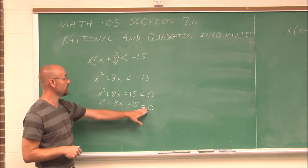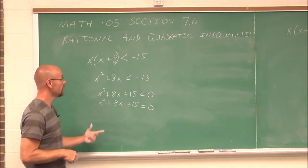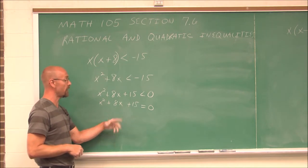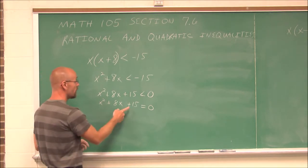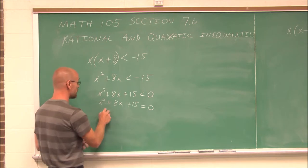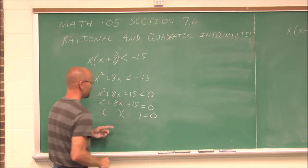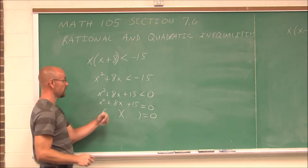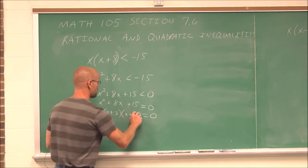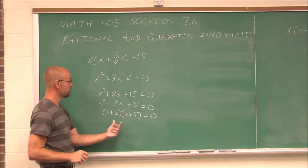So if we set it equal to 0, this is our related equation. We're going to solve it and find our critical points. This particular quadratic factors — the factors of 15 that sum to 8 would be x plus 3 and x plus 5.